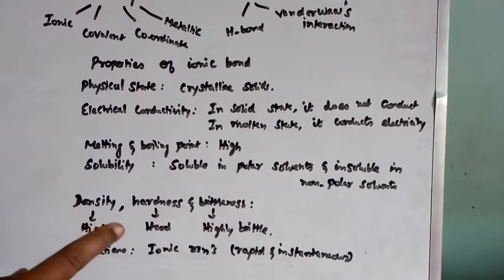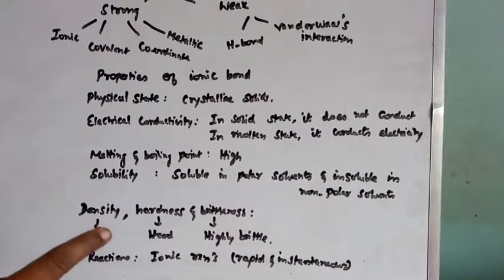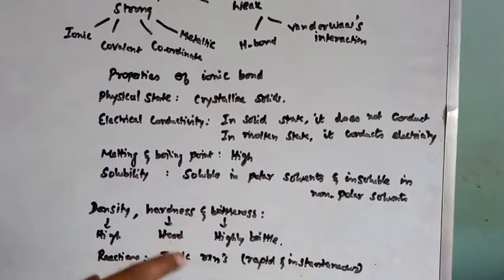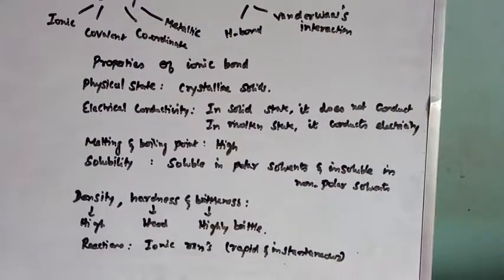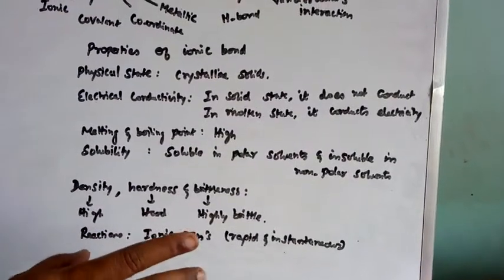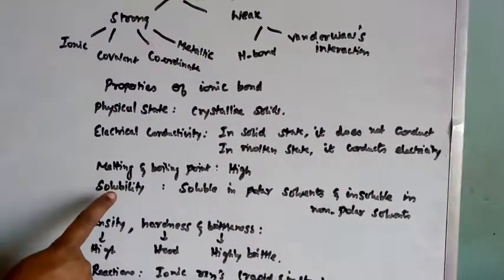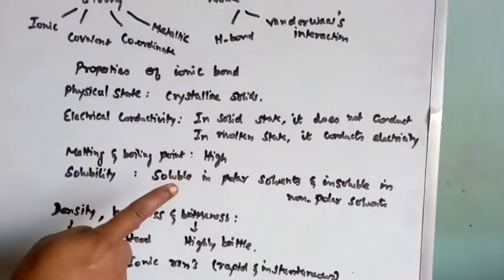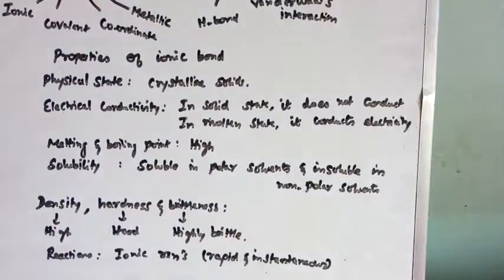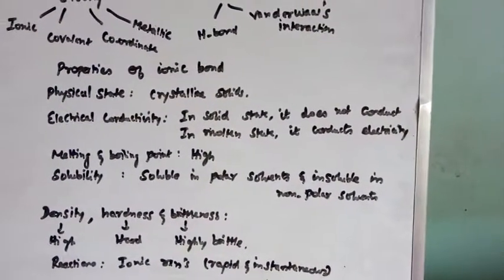The formula is also given. For benzene, formula is C6H6. And carbon tetrachloride, it is CCl4. You should know that formula. So ionic compounds are generally soluble in polar solvents and insoluble in non-polar solvents.